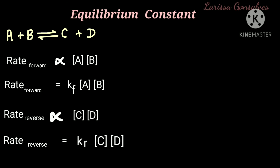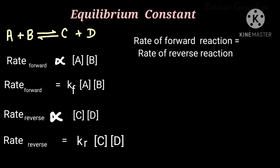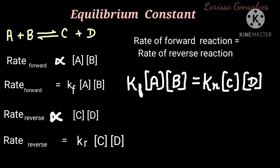We know that when a reaction attains equilibrium, the rate of the forward reaction and the rate of the reverse reaction become equal. Hence we can write: rate of forward reaction equals rate of the reverse reaction. Substituting the above equations, we get: KF times concentration of A times concentration of B equals KR times concentration of C times concentration of D.